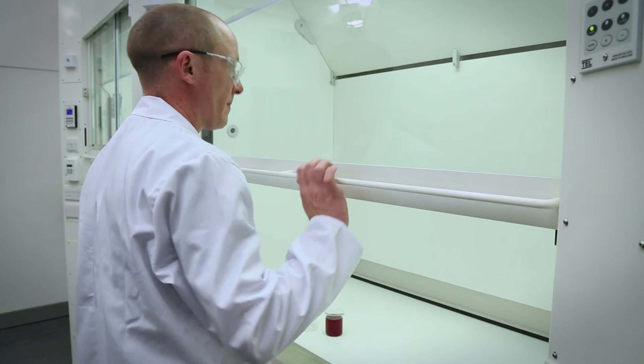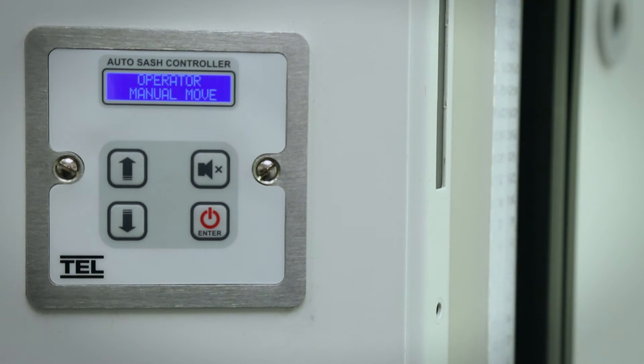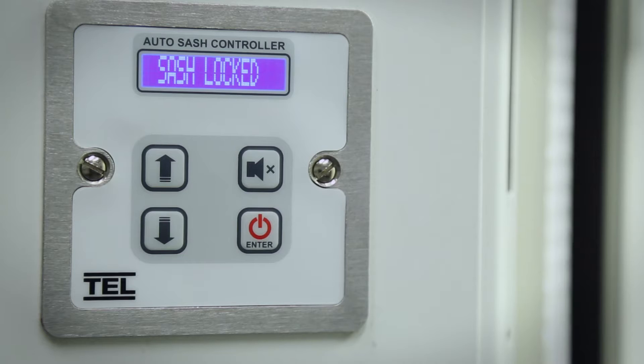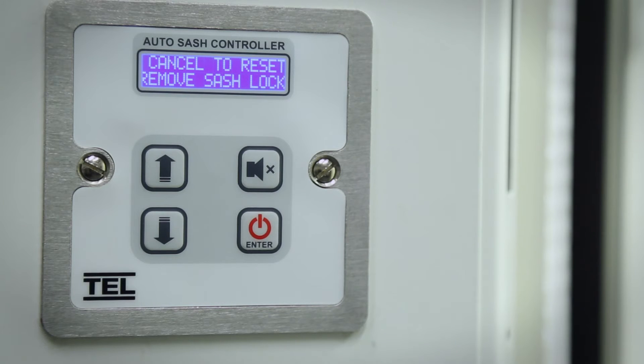When the optional sash lock feature is enabled, the user can lift the sash fully open and it will automatically disable the auto sash to allow for the loading and unloading of equipment. This will activate a timer that will give an alarm to release the sash lock if left unattended in this position for a predetermined adjustable time.